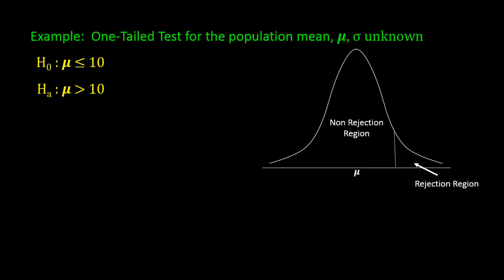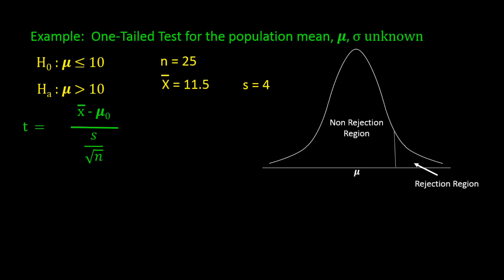Now we are ready to take a sample. We take a sample of 25 cars being serviced for an oil change and find the sample average is 11.5 minutes with a sample standard deviation of 4 minutes. Is that enough evidence to conclude that the mean oil change time is greater than the claimed 10 minutes? We calculate the test statistic: t is equal to x-bar minus the hypothesized value of the mean divided by s over the square root of n — that is 11.5 minus 10 divided by 4 over the square root of 25 — and that is 1.875.